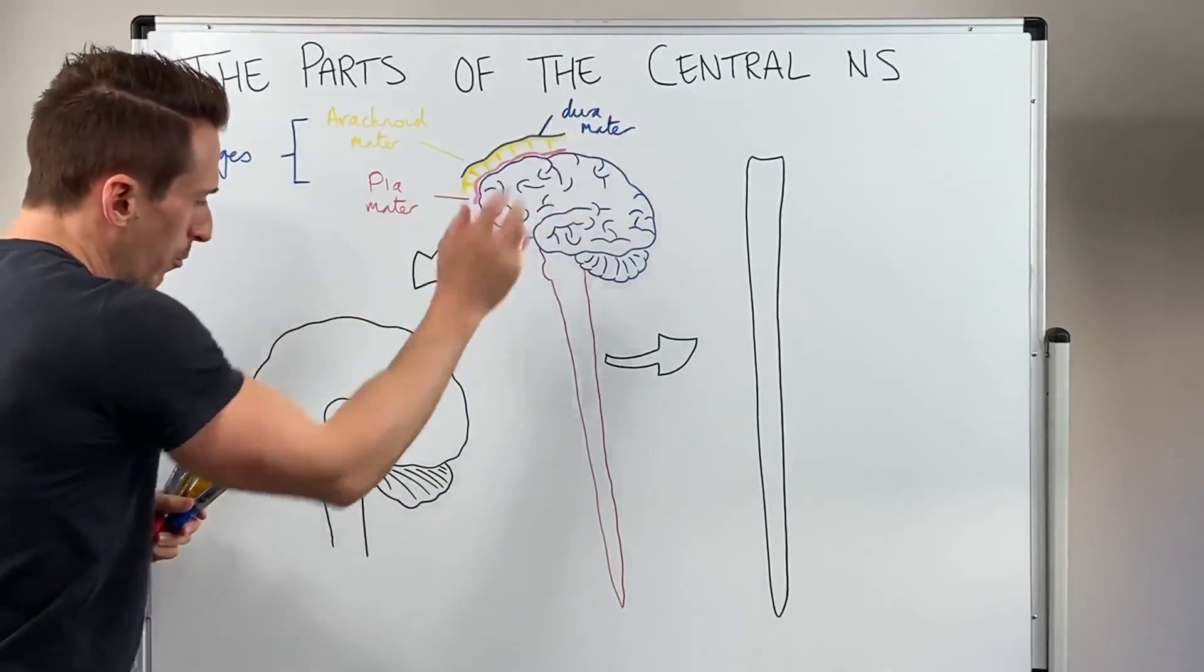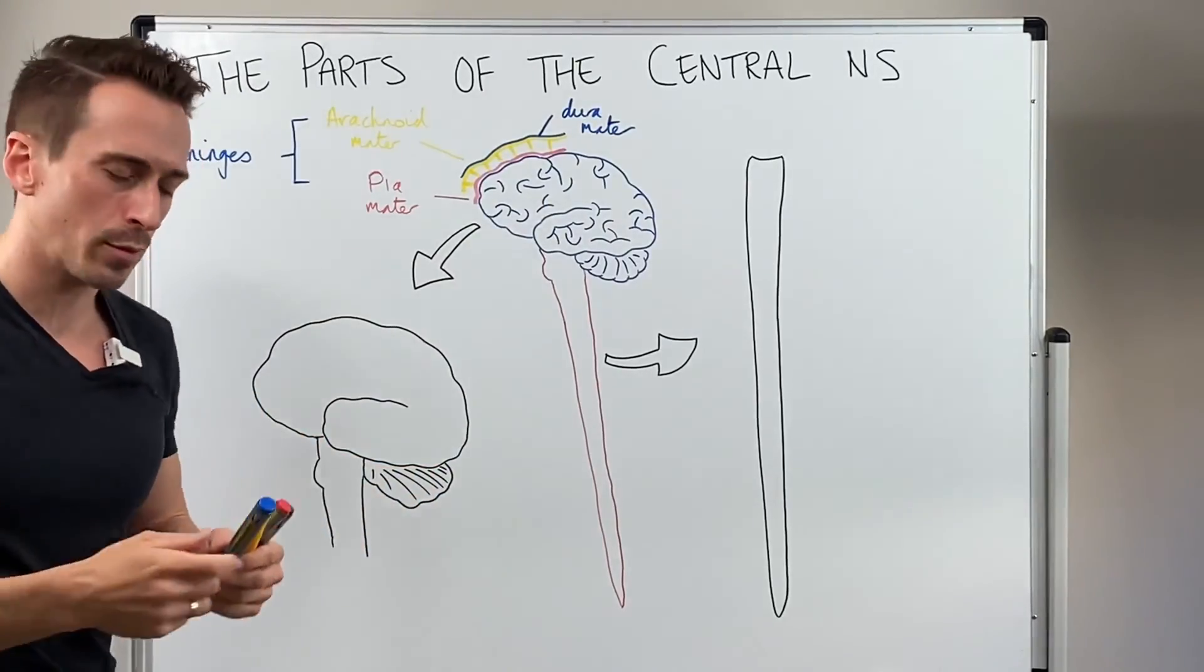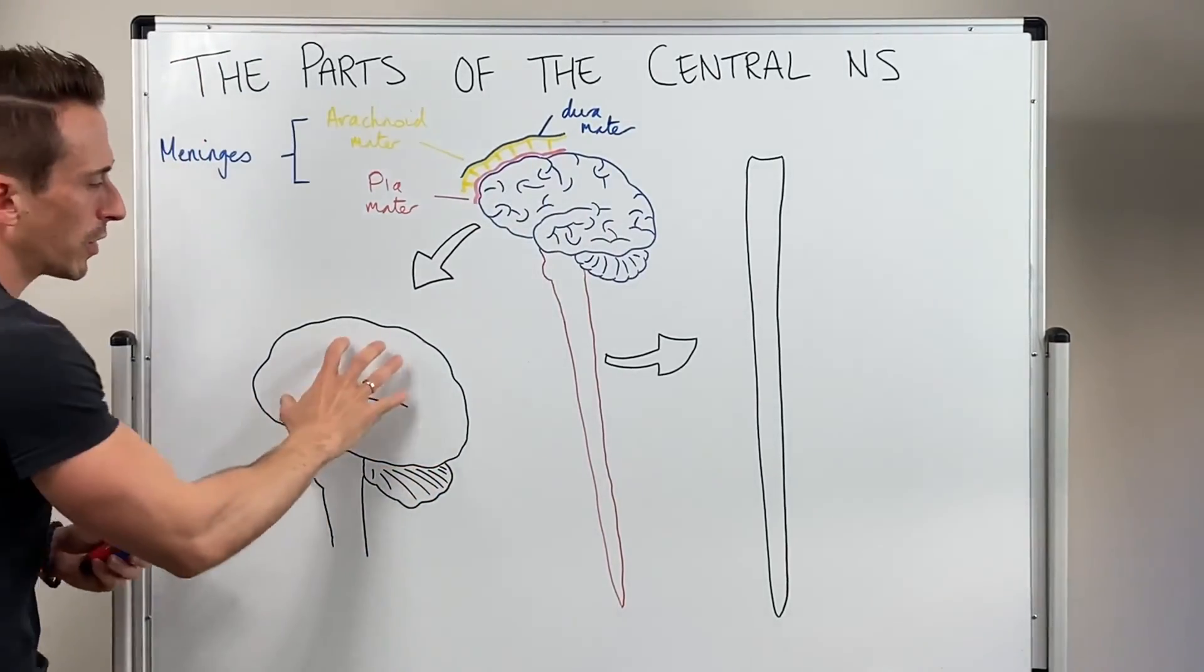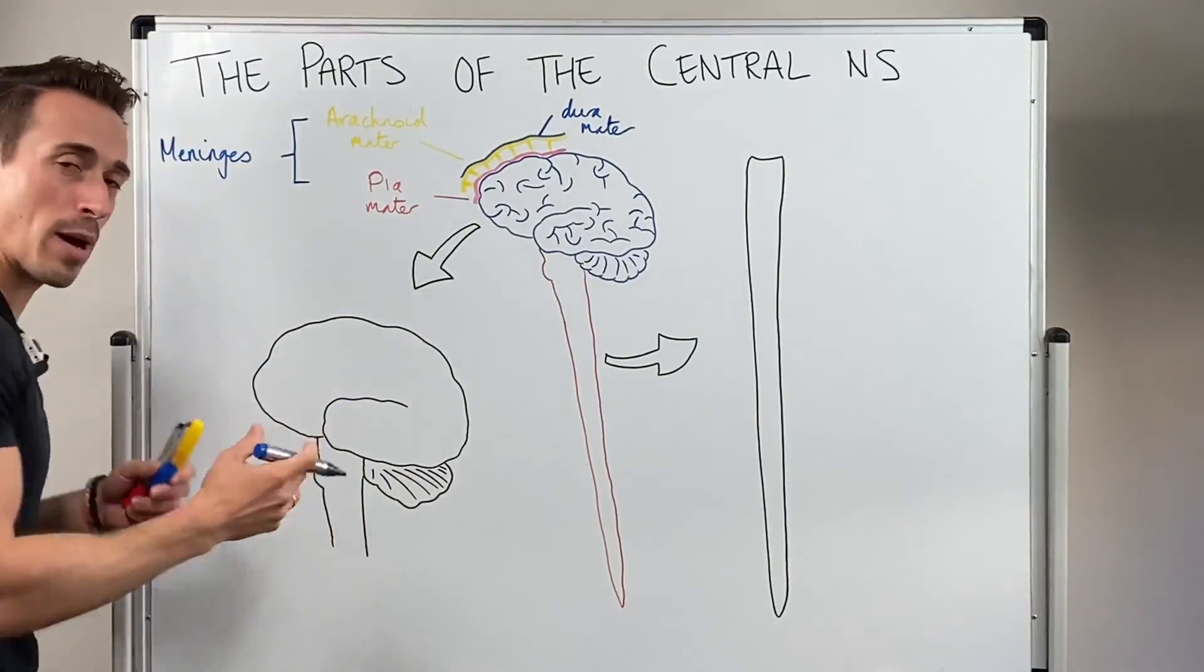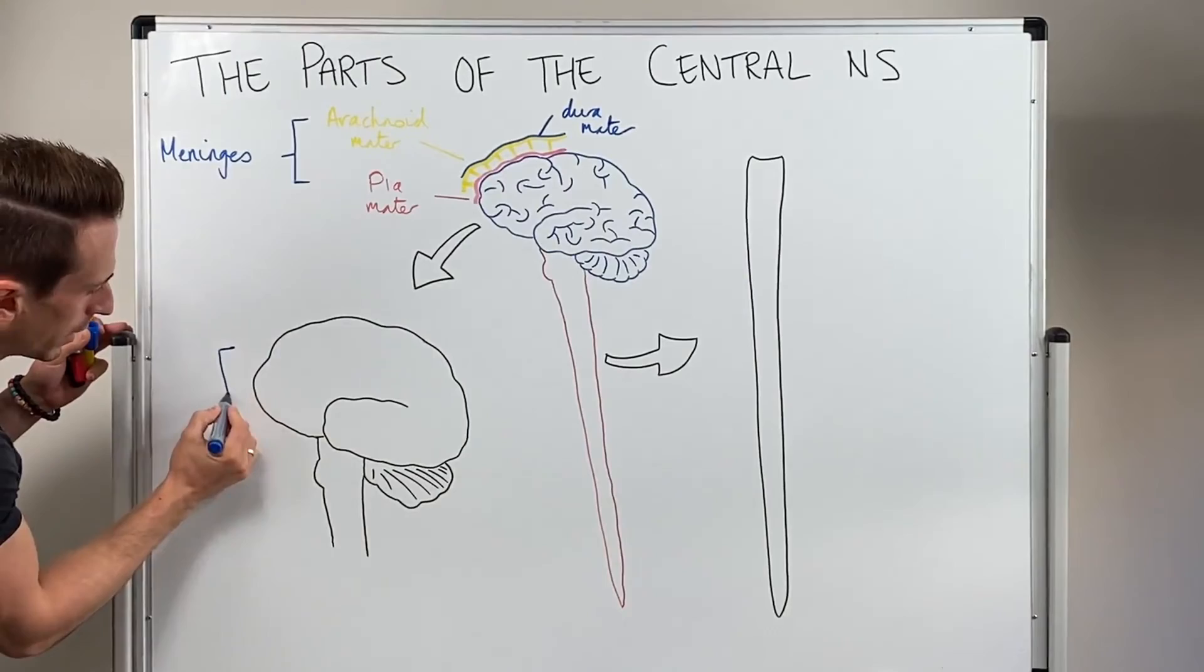So let's take the brain, move it down, have a look at the various parts of the brain. First, we've got the actual brain itself that we call the cerebrum, which is made up of multiple lobes. So we've got the cerebrum here.